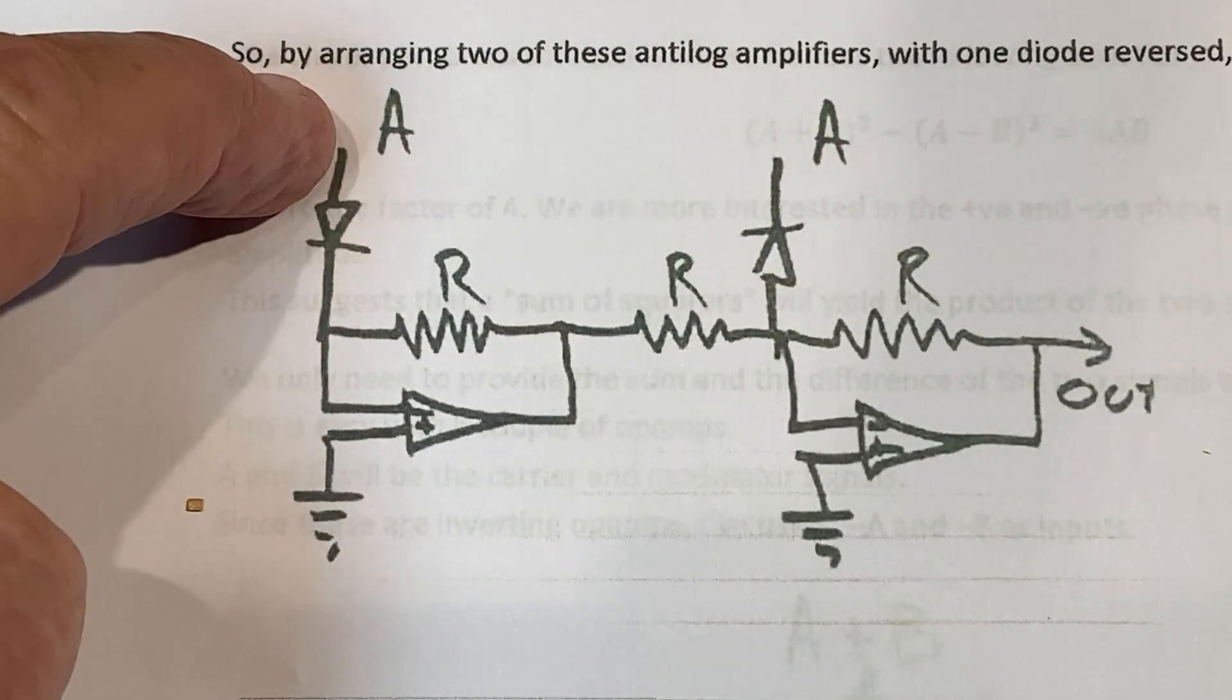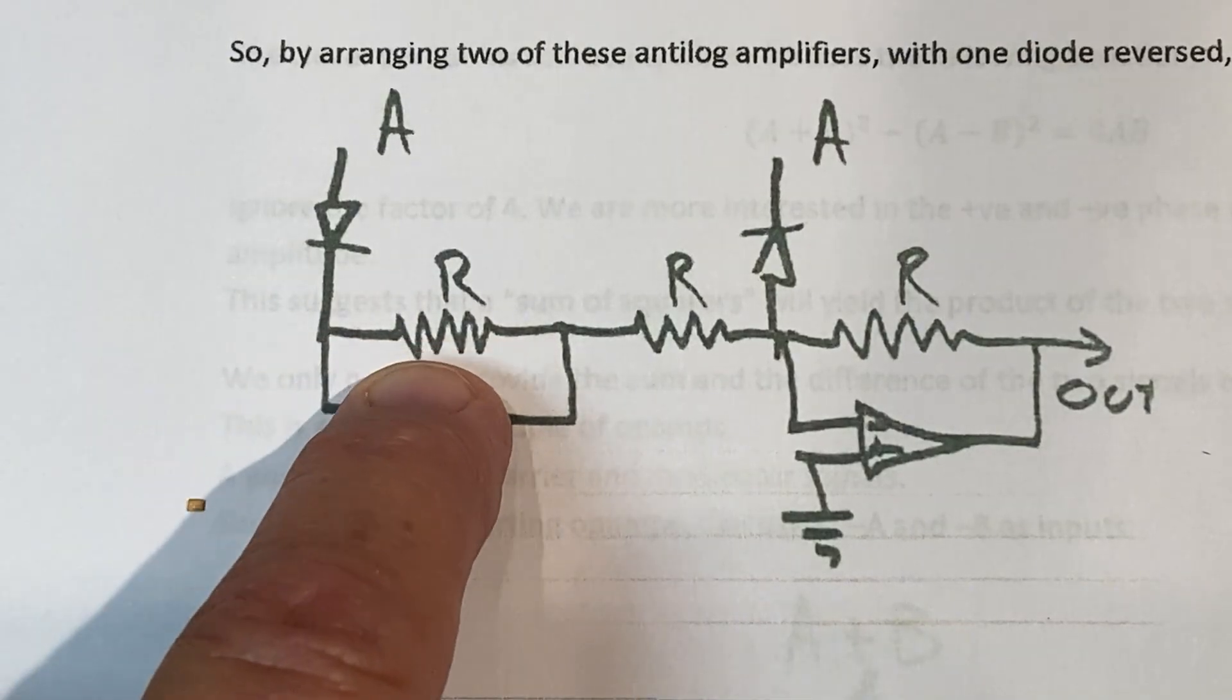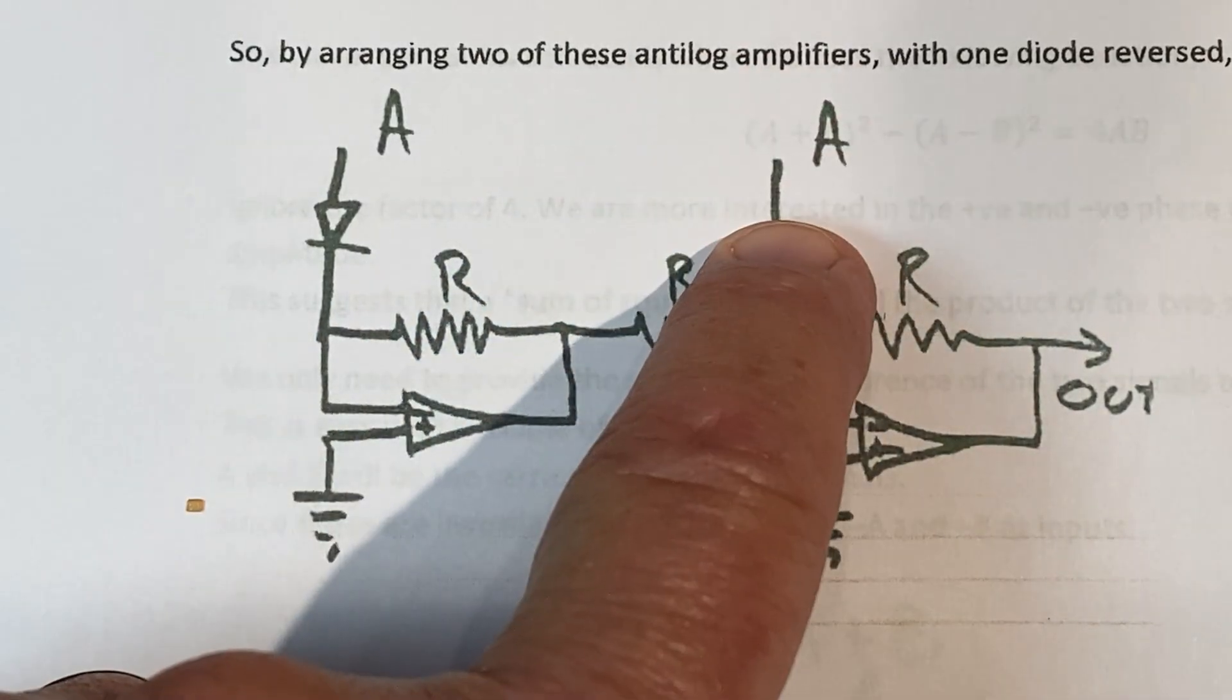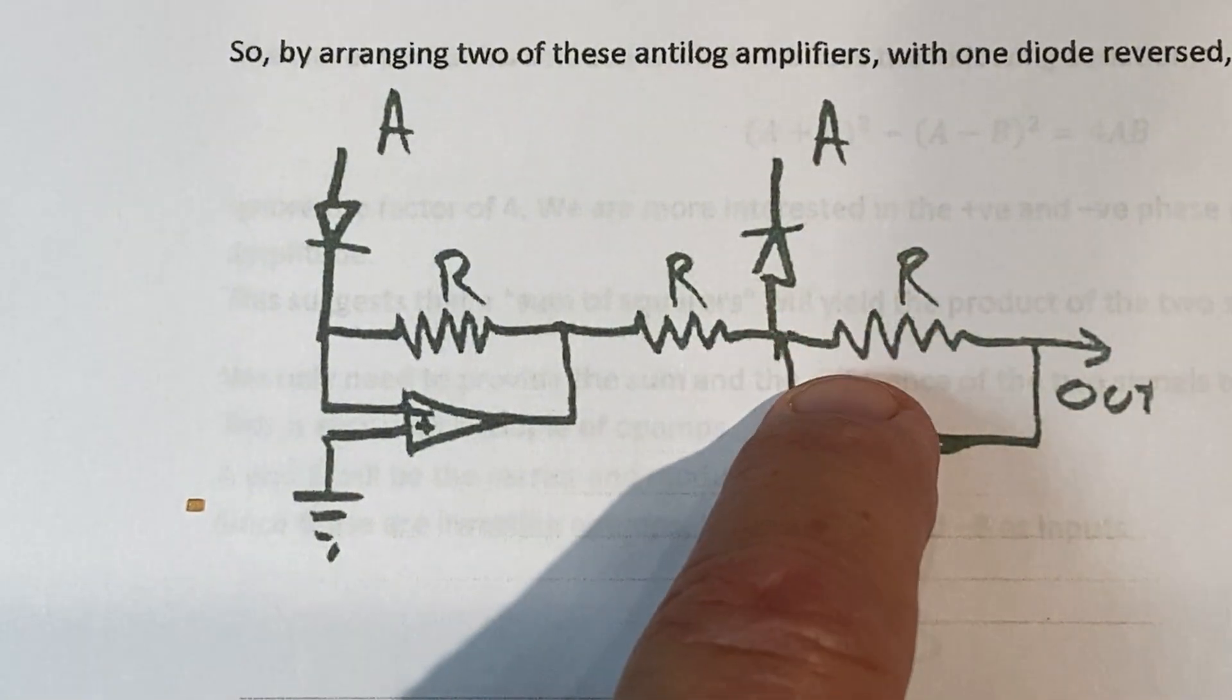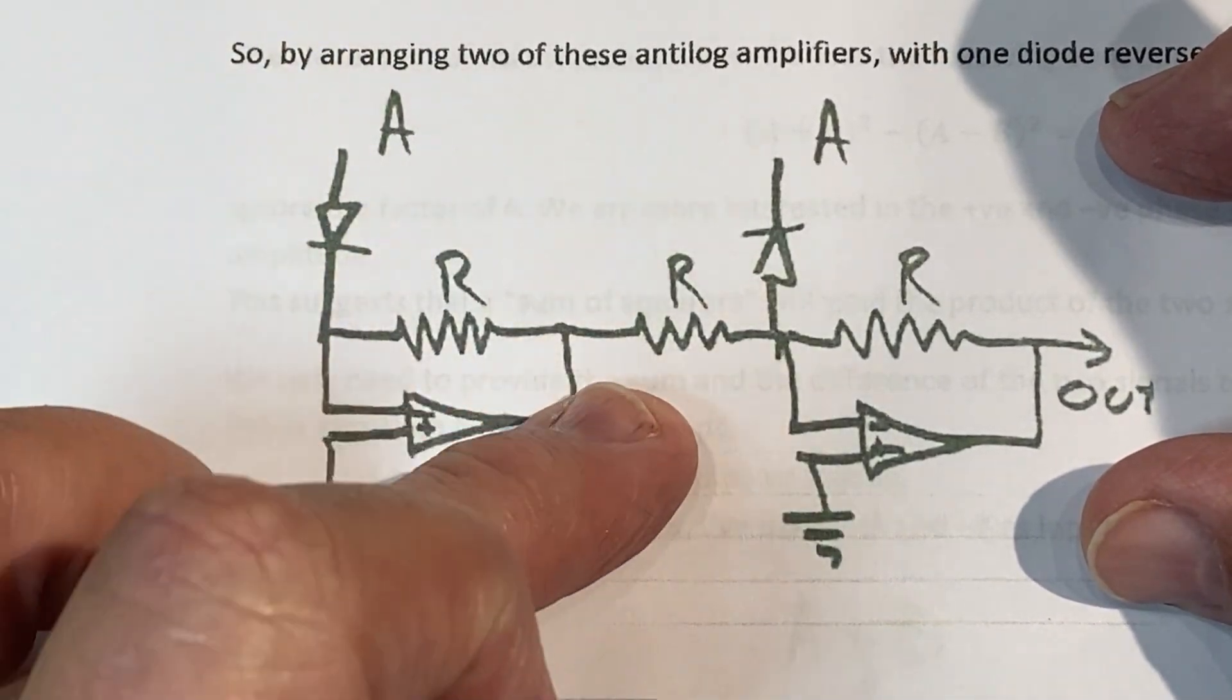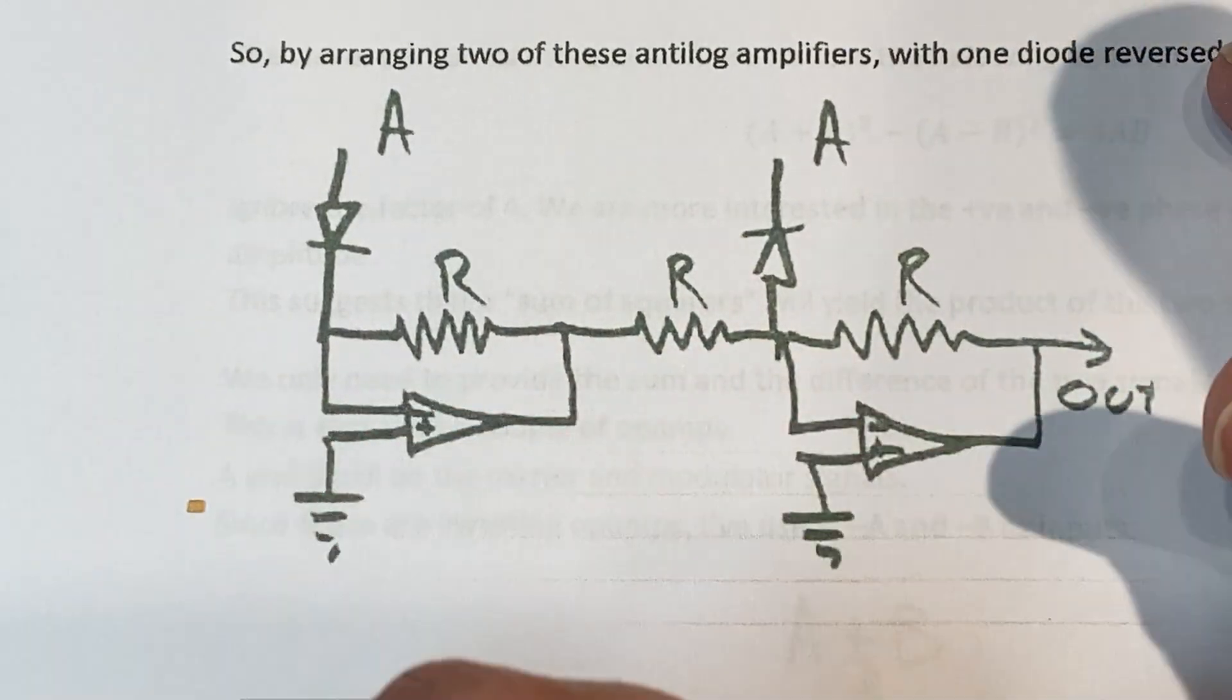So positive signal comes through, we get this anti-log amplification out of it and then it gets inverted again. If the signal is negative, we still do the anti-log calculation, but now both of these are the same polarity, where this is positive, it gets inverted, it becomes negative, then it gets inverted again, and it becomes positive.